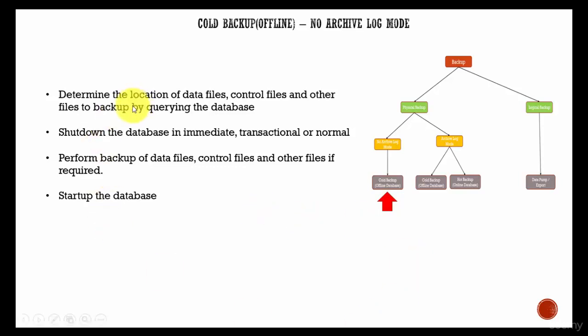The first step is to find out the location of the data files, control files, and the other files which you want to backup. You need to find out before shutting down the database, because if you don't know, it will be difficult to backup the files. By querying the database, you can find the location of the data files, control files, and other files as needed.